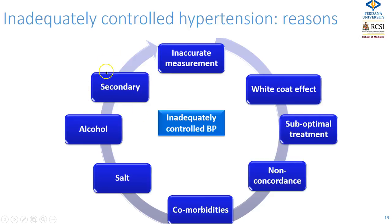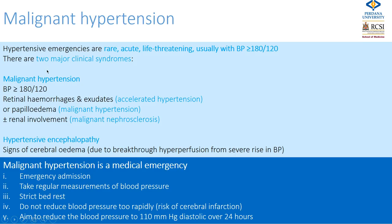Malignant hypertension is a hypertensive emergency — rare but severe and life-threatening, usually associated with blood pressure in excess of 180 over 120. There are two major clinical syndromes: malignant hypertension, where there are haemorrhages, exudates, or papilloedema and possible renal involvement; and hypertensive encephalopathy, which additionally shows signs of cerebral oedema due to breakthrough hyperperfusion. These patients need emergency hospital admission, very frequent blood pressure checks, strict bed rest, and the blood pressure should not be reduced too rapidly due to the risk of cerebral infarction — aim to reduce systolic to 110 over 24 hours.